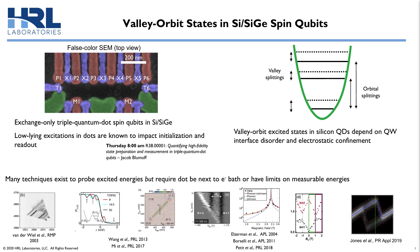Initialization and readout are known to be affected by low-lying excitations in silicon dots. For more information on our initialization and readout, I encourage you to hear Jacob Blumhoff's talk on state prep and measurement. Where the valley orbit excited states are in our dots depends on the disorder present at the quantum well interface, as well as on the electrostatic confinement potential. We want to know exactly where these states are in order to provide good feedback to our epitaxial growth team. There are already several techniques in existence to measure the excited state energies of dots. What we'd really like, however, is a way to measure the energy spectra using our typical qubit operating techniques, which rely on DC baseband pulses as well as low magnetic fields.